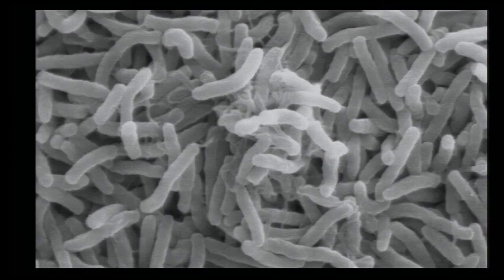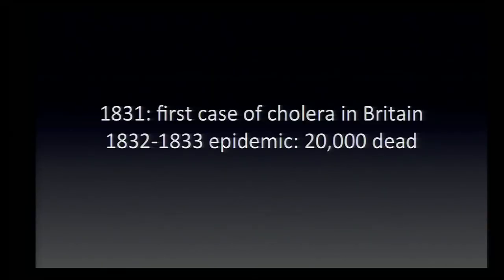Cholera is a bacterial disease that spreads through unsanitary drinking water. Once infected, without treatment, you run about a 50% chance of dying, usually due to dehydration. Cholera came to Europe in the early 1800s. The first known case in Britain was recorded in 1831; the first epidemic came a year later, and by 1833 had killed 20,000 people in Britain and Wales. A second epidemic in the 1840s killed 50,000 people. By 1850, cholera had become the most important unsolved problem of its day.